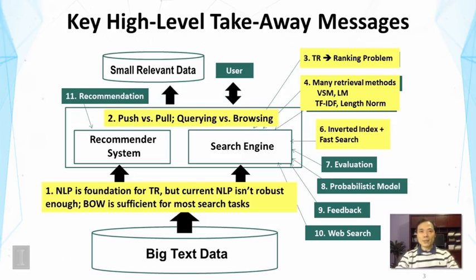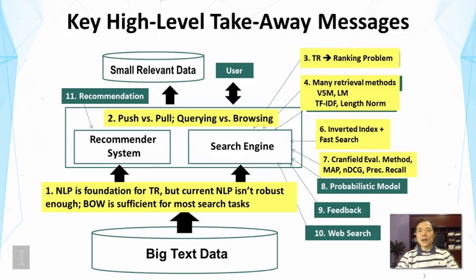We then talked about how to evaluate the text retrieval system, mainly introducing the Cranfield evaluation methodology. This is a very important evaluation methodology that can be applied to many tasks. We talked about the major evaluation measures. The most important measures for a search engine are MAP — mean average precision — and NDCG — normalized discounted cumulative gain — and also precision and recall as the two basic measures.